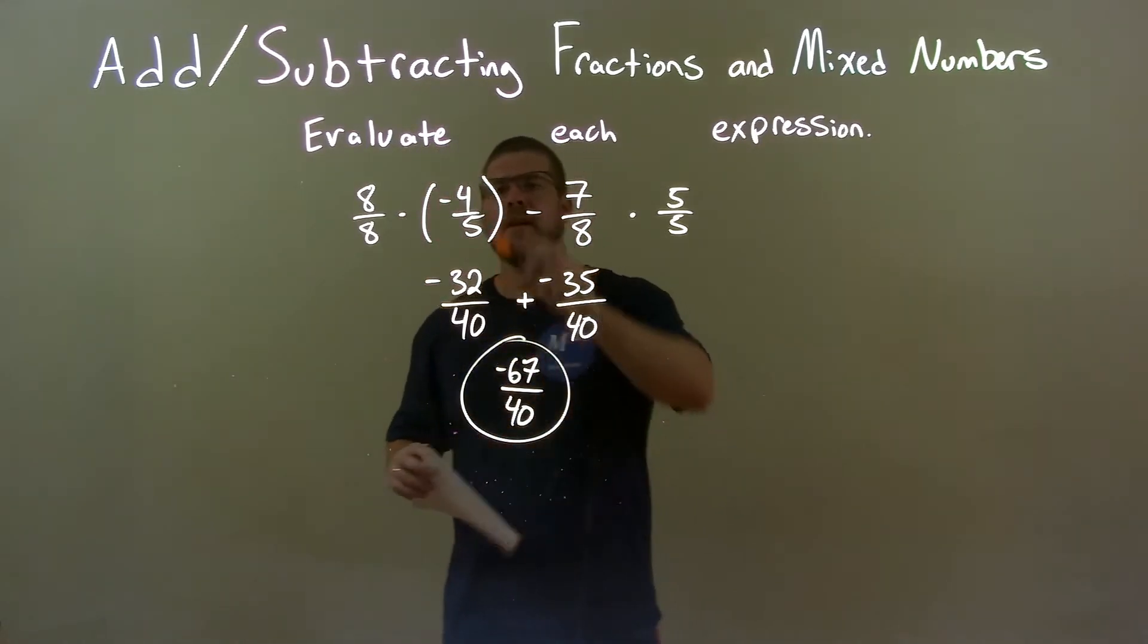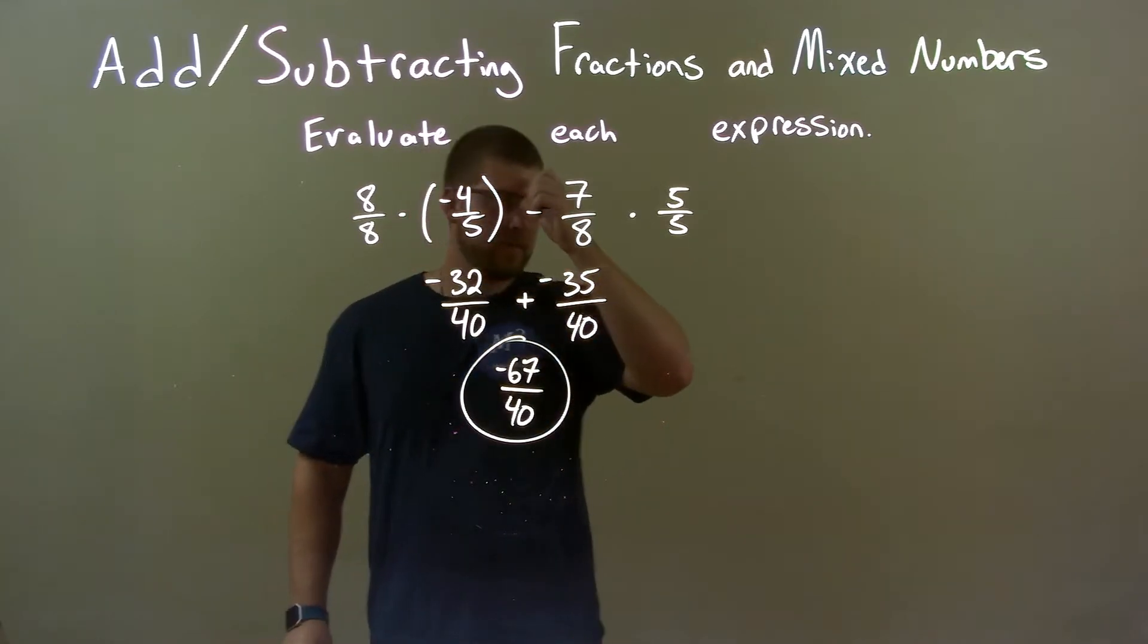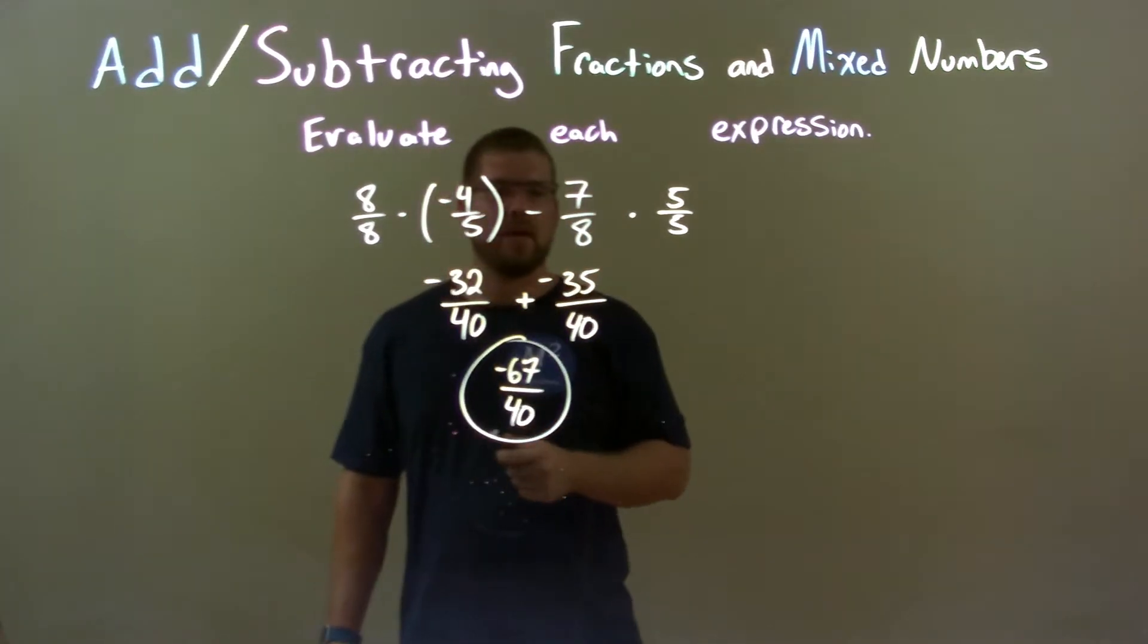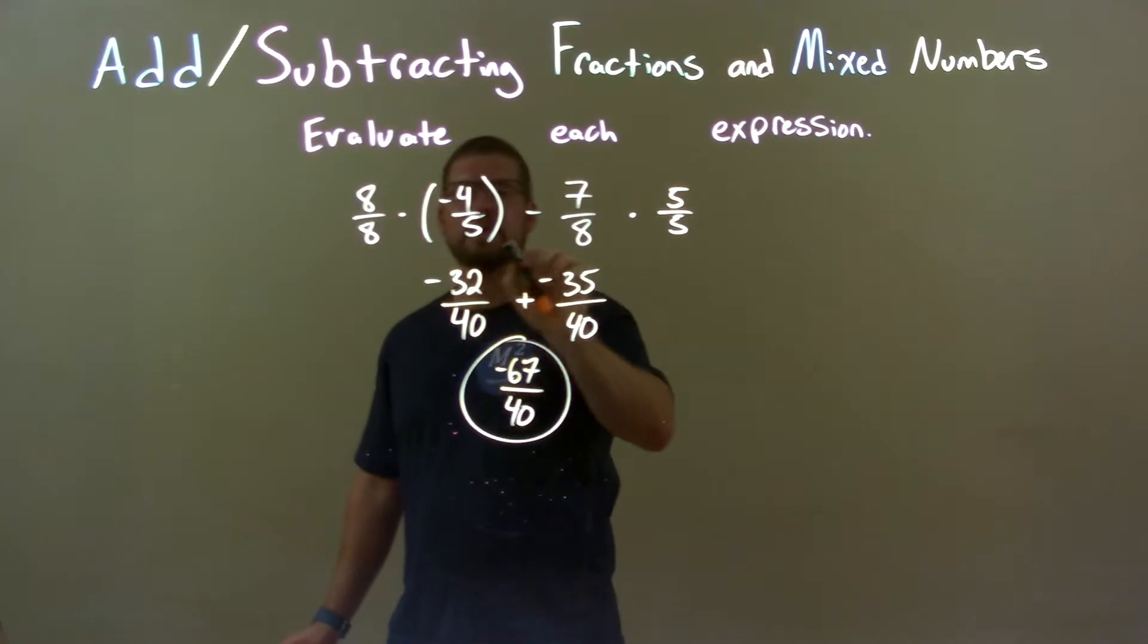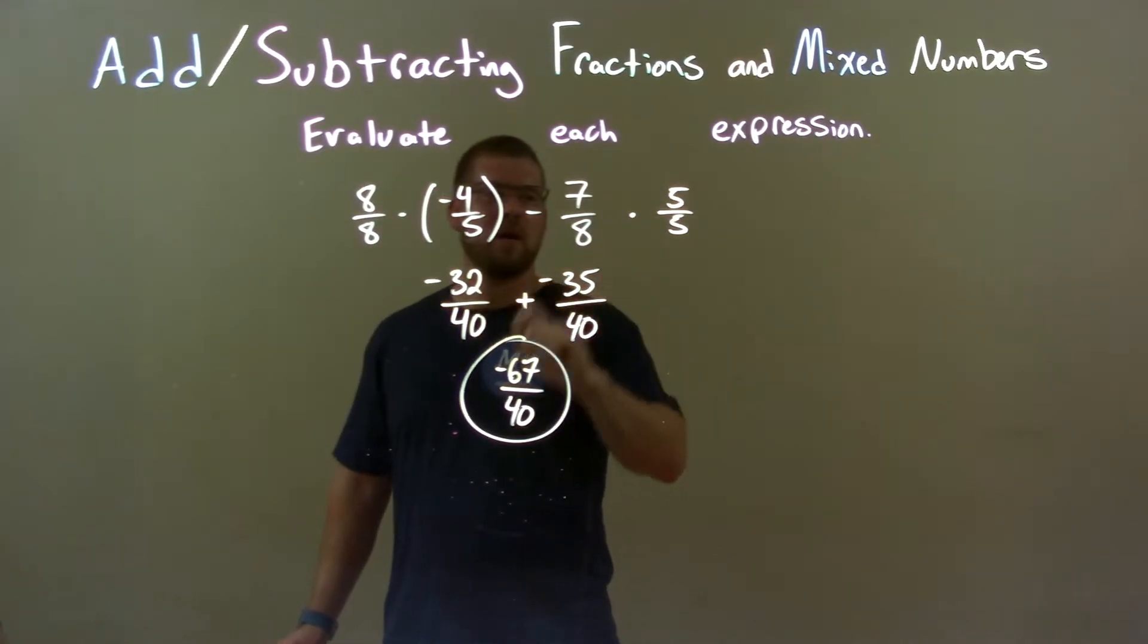So quick recap, we're given negative 4 fifths minus 7 eighths. We need to simplify that. So I found a common denominator between the two, and that gave me the base of 40 eventually.